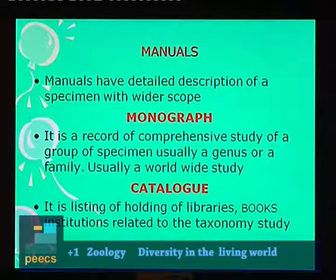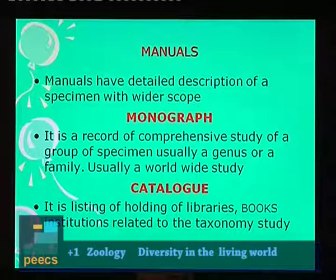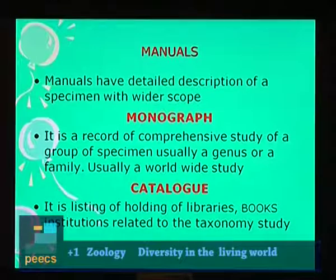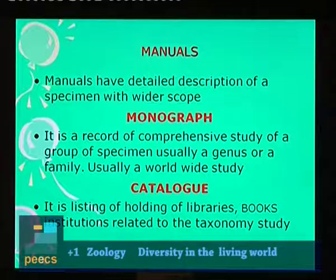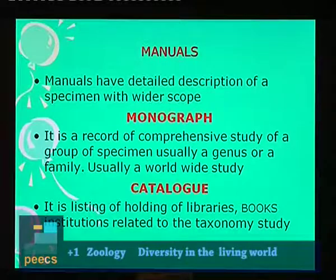Then manuals, which have detailed descriptions of specimens with a wider scope. Then monograph — a record of comprehensive study of a group of specimens, usually a genus or a family, and usually a worldwide study. Catalogue is another type of taxonomical aid — it is a listing of holdings of libraries, reference books, or institutions related to taxonomic study.